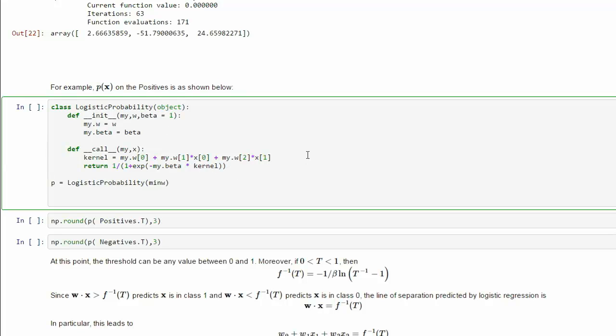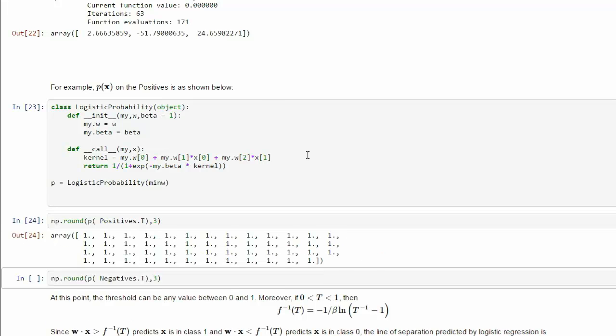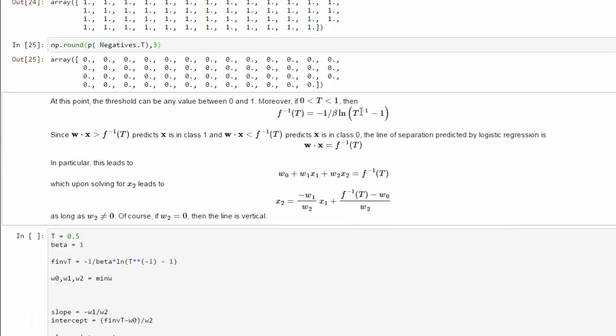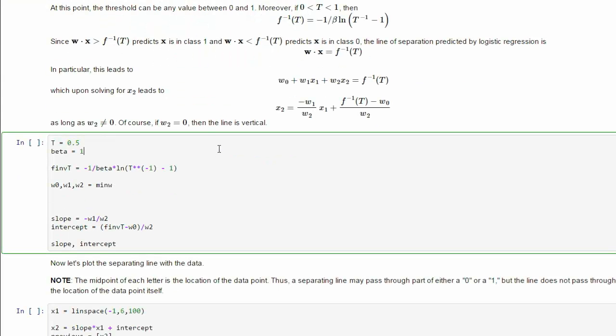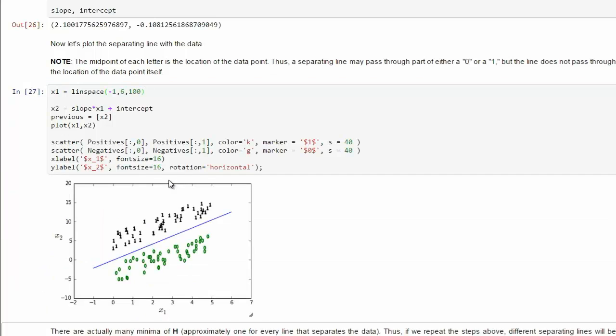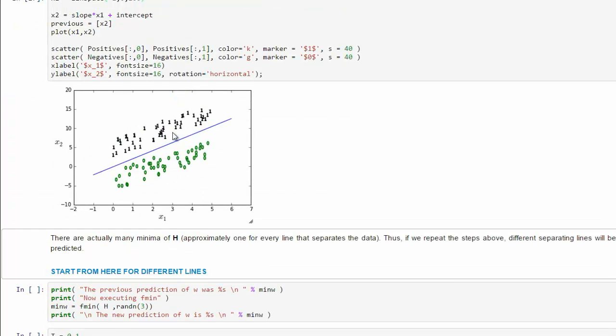When we do that, then lo and behold, we get values for a minimum. That allows us to create a model, a probability model, called P. Notice that if we apply P to the positives, we get all 1s. P to the negatives is all 0s. Lo and behold, we can use this to get our f inverse. That allows us to choose our threshold. Once we've selected our threshold, in this case we're looking at T equals 0.5, then we get a line that separates the data. There's the slope, 2.1, and the intercept, negative 1.8. Now let's see what that looks like. There it is, a line that separates.